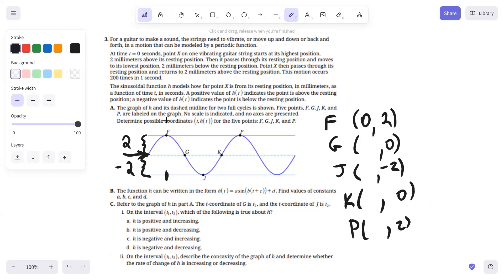So we know that it takes, we know that the string goes through this cycle 200 times in one second. So that means that there's one cycle in one two hundredth of a second. So their complete cycle is going to end at one two hundredth like this. So you would have one two hundredth here. J is going to be right in the middle of that, which is at one four hundredth. And then G and K are going to be in the middle of those subsequent intervals, which are one eight hundredth and three eight hundredths. So those are the five points.